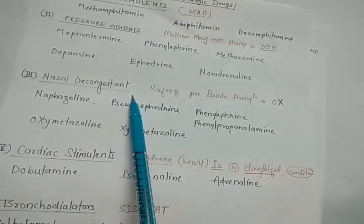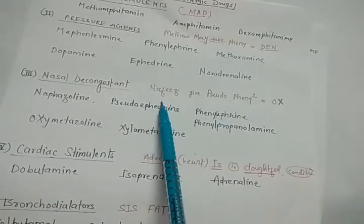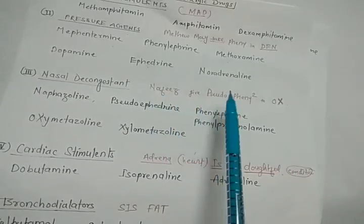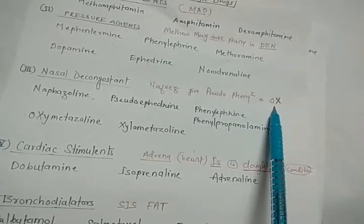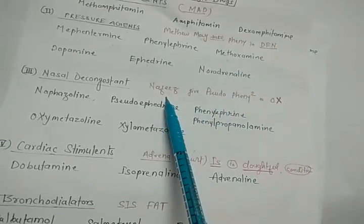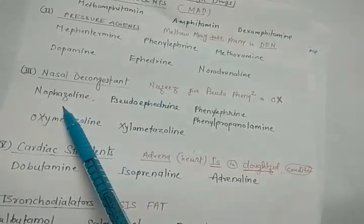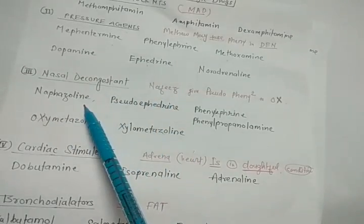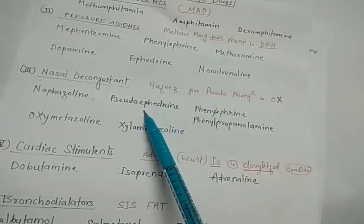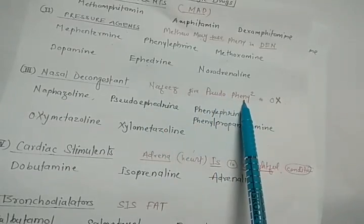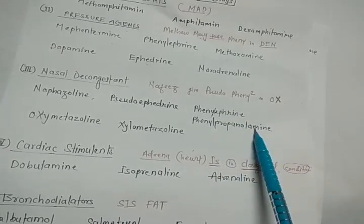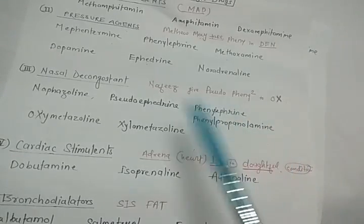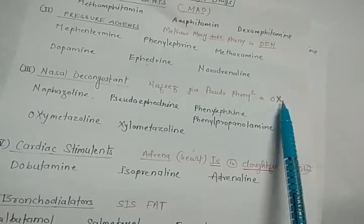For nasal decongestant, the trick is: 'Nafis gives pseudo Phenny two ox.' Nafis = naphazoline, pseudo = pseudoephedrine, Phenny represents two terms — phenylephrine and phenylpropanolamine, and ox/X represent oxymetazoline and xylometazoline.